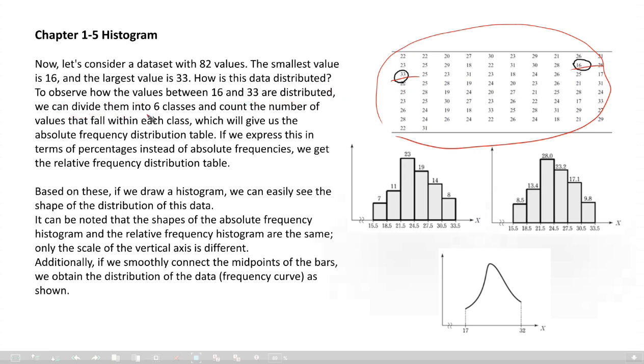To observe how the values between 16 and 33 are distributed, we can divide them into classes. I took six classes: 15.5, 18.5 to 21.5, something like this. The width of each class is 3. Why did I choose 15.5? The data are integers, so I use decimal values. So for 15.5 to 18.5, you don't have to use notation like greater than or equal to, less than or equal to, right?